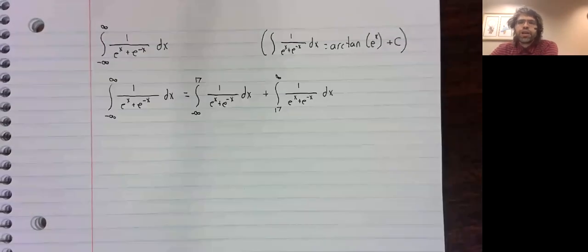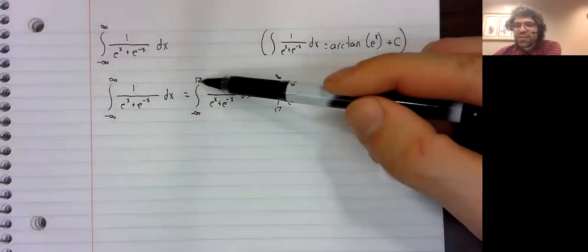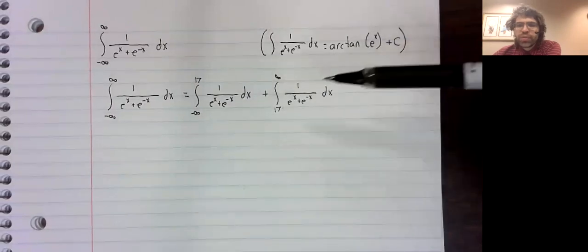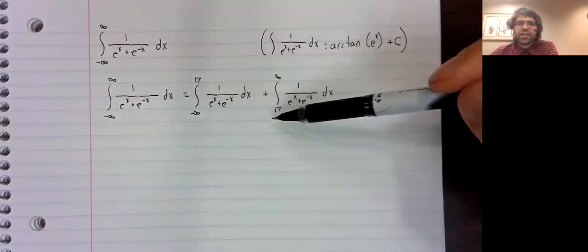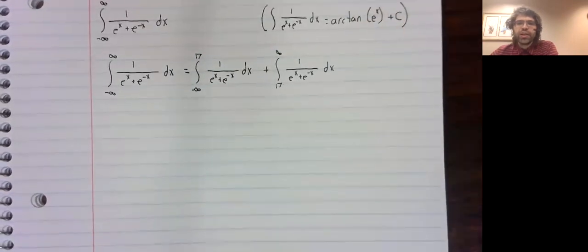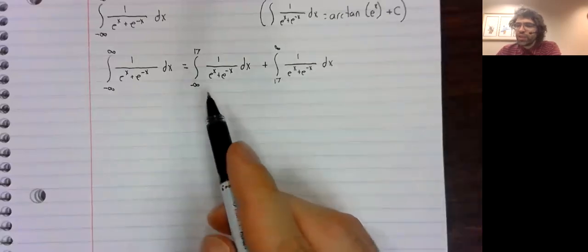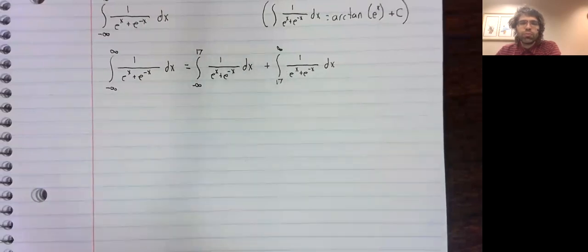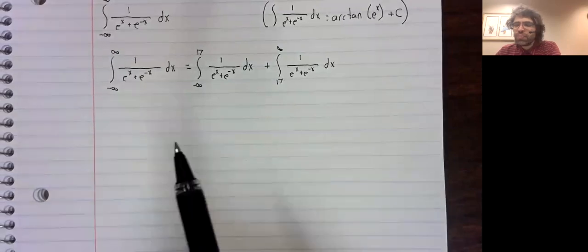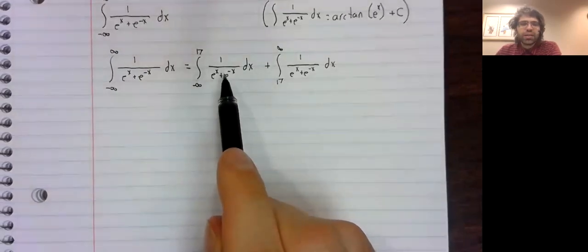If you've already read the notes that accompany this video, you'll see that I'm going off script. In the notes, I use a zero here. But I've claimed it doesn't matter what number we use, so I've selected a different number to illustrate that. And we now need to take these improper integrals, one after another. Let's start with this.